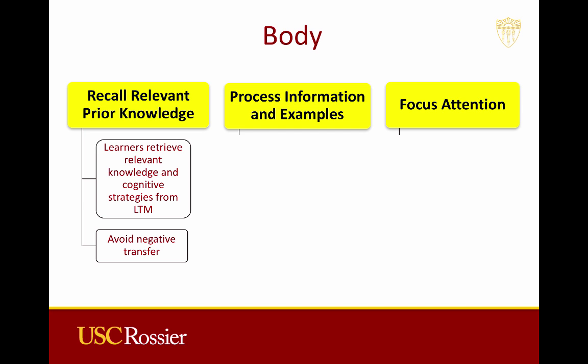During this event, a comparative advanced organizer provides a framework or schema for new learning by comparing a similar known entity to it. Analogies could also compare known concepts to concepts to be learned. An expository review is a simple way to summarize or restate relevant prior knowledge that learners already know. During this event, we want to avoid negative transfer, or the application of inappropriate or inaccurate prior knowledge to the current context or lesson.